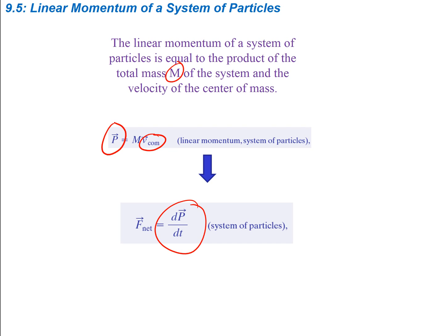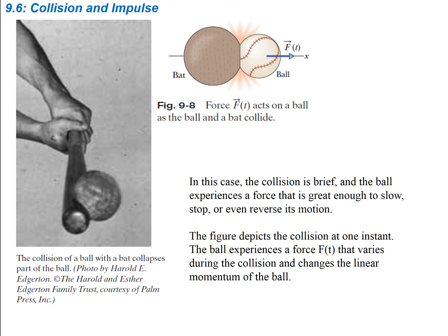Now let's talk about collisions and impulse. The collision of a ball with a bat collapses part of the ball, so there's a period of time that the collision is taking place. In this case the collision is brief and the ball experiences a force that's great enough to slow, stop, or even reverse its motion. The figure depicts the collision at one instant. The ball experiences a force F(t) that varies during the collision and changes the linear momentum of the ball.